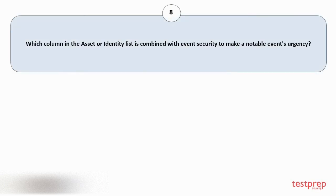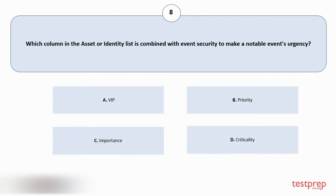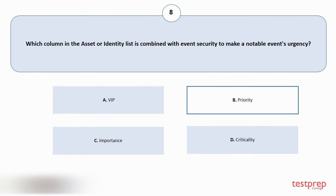Question number eight: which column in the asset or identity list is combined with event severity to make a notable event's urgency? Options are: A) VIP, B) Priority, C) Importance, D) Criticality. The correct answer is option B.